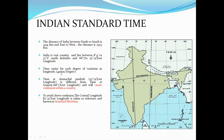India lies between 68 degrees 7 minutes to 97 degrees 25 minutes east longitude. The time varies 4 minutes for every 1 degree of longitude. To avoid confusion within the country, the central longitude of 82 degrees 30 minutes east is taken as reference and known as the standard meridian, represented by the dotted line on the Indian map.